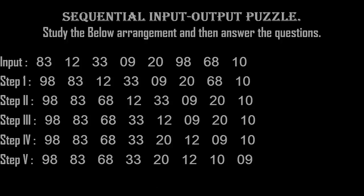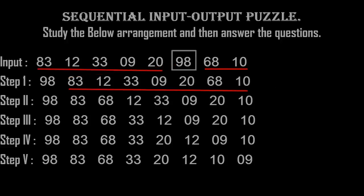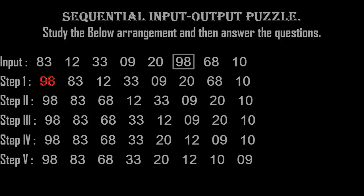Now this is very important: going through the steps from one to five, we need to check how many elements are arranged in each step. In step one, the highest element from the input — that is 98 — is moved to the first place, and all the rest of the elements are in the same order as the input. We are confirmed that only one element is being moved in each step. So the pattern is: arrange the numbers in descending order by selecting only one element per step. There is a little twist we will discuss with the next example.